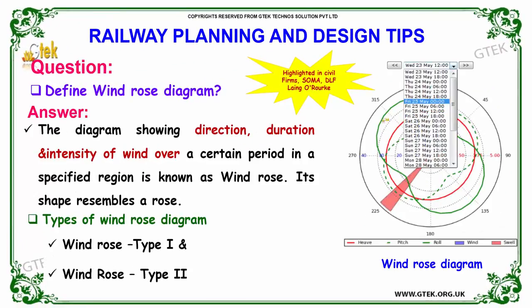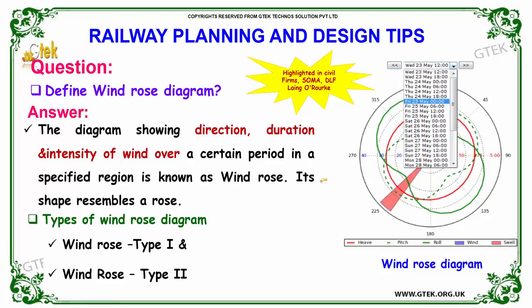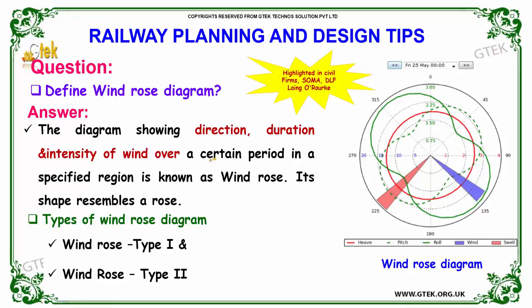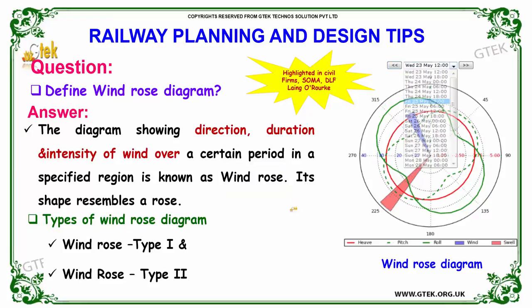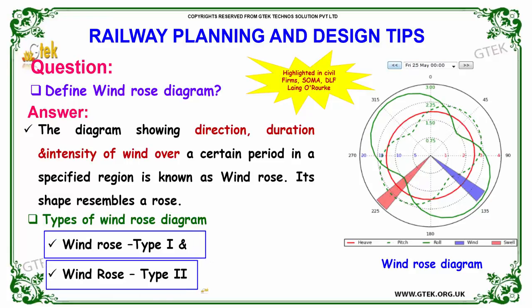The next question: define wind rose diagram. A diagram showing direction, duration, and intensity of wind over a certain period in a specific region is known as a wind rose. Its shape resembles a rose. The types of wind rose diagrams are wind rose type 1 and wind rose type 2.